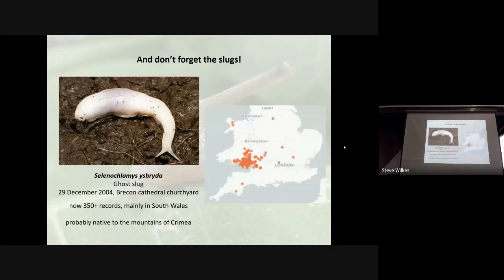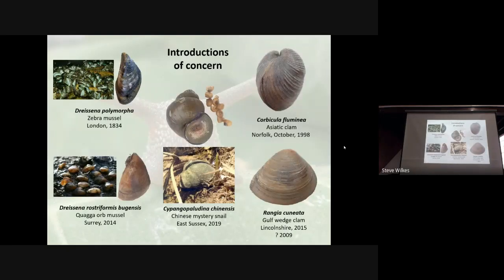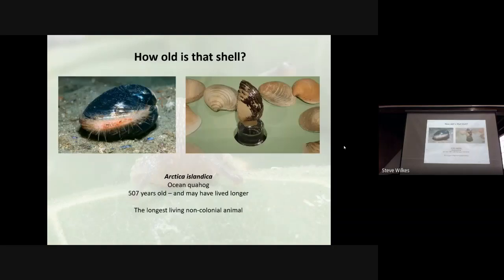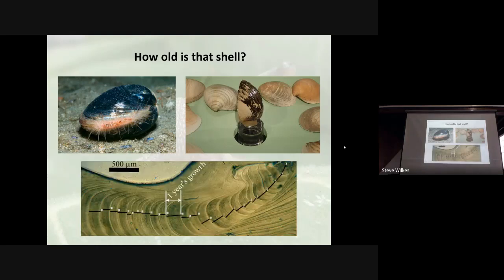Slugs have also been introduced. One was found in Cardiff and was first described to the world — we didn't know where it came from. I've got examples of these for those coming to the workshop this afternoon. A lot more freshwater snails are also causing problems. And a small aside: you may think snails live a few years, but this seashell — of which I have an example — is actually the oldest known longest-living non-colonial animal of any type in the world. This one was dated to 507 years, and you can count the growth rings on it.